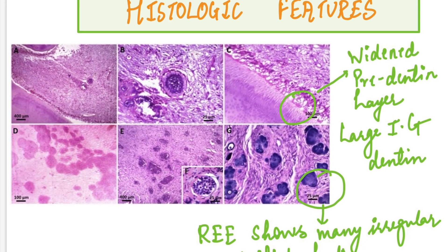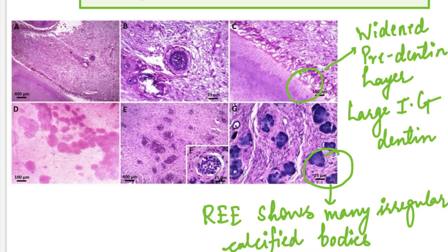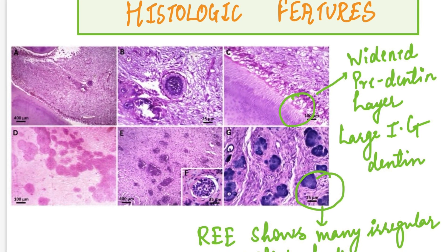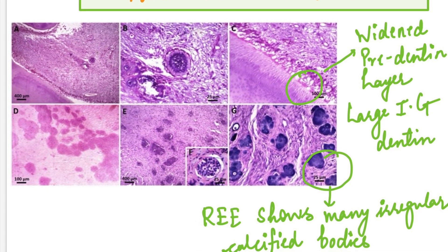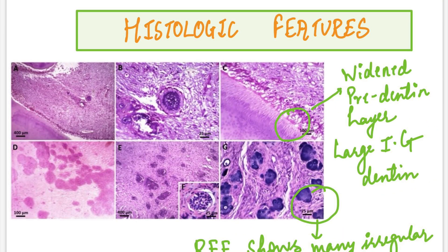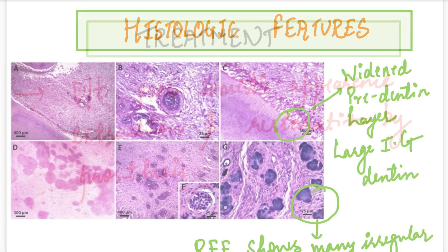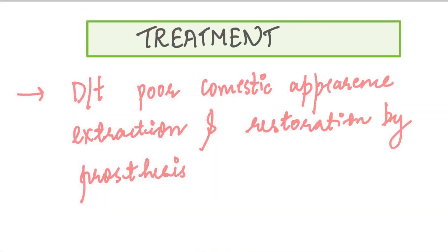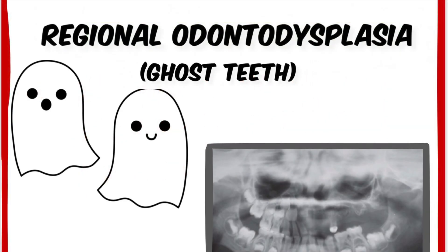Those areas are stained darkly. It is the reduced enamel epithelium which covers the enamel of the unerupted tooth, and it shows many irregularly calcified bodies. Larger areas of interglobular dentine are also evident. As seen in the previous pictures, these teeth have a very poor cosmetic appearance and are poorly calcified, making them prone to accelerated attrition and exposure of the pulp. Therefore, either surgical extraction or restoration by proper prosthesis is essential. That was all about ghost teeth — I hope you understood this topic very well. Thank you, see you next time.